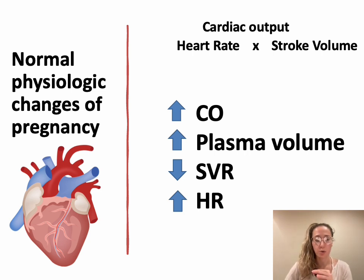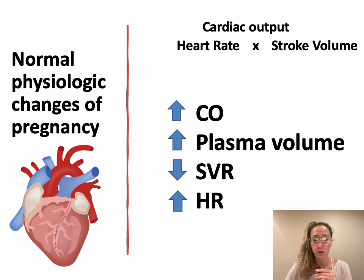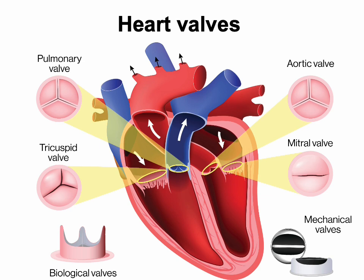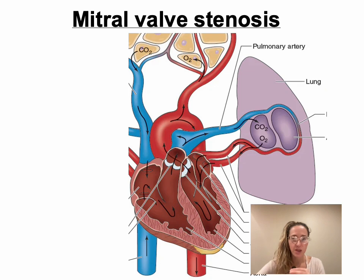The body is amazing with all these physiologic changes in pregnancy, but because of these changes we do have to be very careful about valvular disease. Just to remind you where these valves are: here's your mitral valve coming in from the pulmonary side, into the left ventricle, out the aorta. We're really only talking about the left side of the heart today, but just a reminder where the pulmonary and tricuspid valves are.